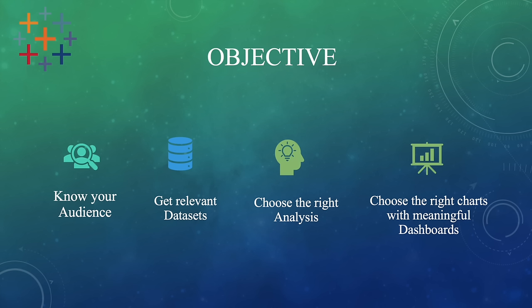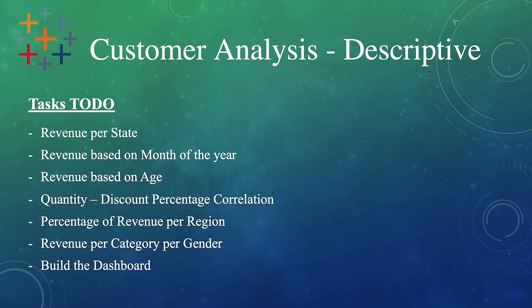Number two: get relevant data sets. Number three: choose the right analysis. There are three main types of analysis — descriptive, predictive, and prescriptive. There are also 44 different types of charts, so make sure you choose the appropriate chart for the information you're about to present. Make sure your dashboard is a solution to a problem — it could be a solution for effective marketing, efficient operations, or better customer service. Let's do some customer analysis and it's going to be descriptive.